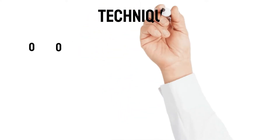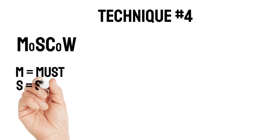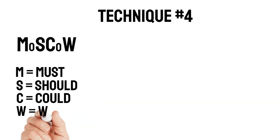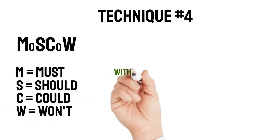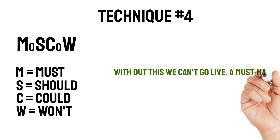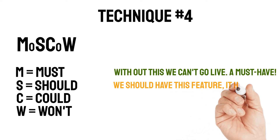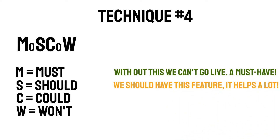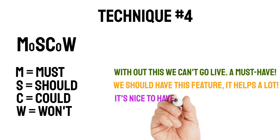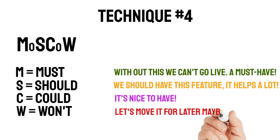Technique number four is the MoSCoW technique. M stands for Must, S for Should, C for Could, and W for Won't. Must means without this requirement we can't go live — it's a must-have, no discussion. Should means we should have this feature because it helps a lot, but it's not a must-have. Could is a nice-to-have, but not a must at all. And Won't means we are not planning it right now — let's move it for later.